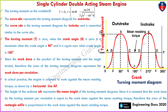The accelerating torque equals T minus T-mean. If T minus T-mean is positive, the flywheel will accelerate; if T minus T-mean is negative, the flywheel will retard. This is the end of the single cylinder double acting steam engine turning moment diagram.